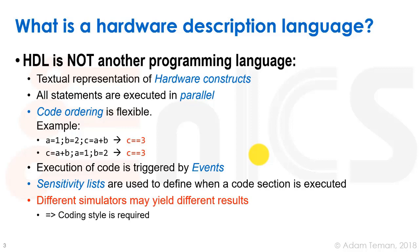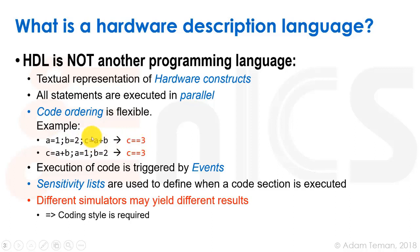This also means that code ordering is flexible. In this example, we can write a=1, b=2, and then c=a+b. In a regular language, a=1 happens first, then b=2, and then c equals 3. The same result happens in Verilog, but interestingly, we can put c=a+b first, then write a=1, then b=2, and c still equals 3, because a=1 and b=2 are happening in parallel with c=a+b.